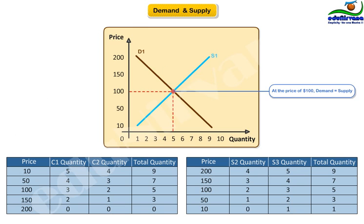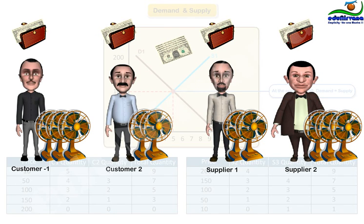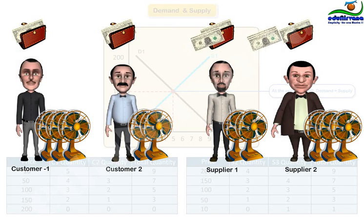The point of intersection of the two curves is called the equilibrium point where the customers are happy with the price they incur to buy a table fan and the suppliers are also happy with the price they receive for selling table fans.